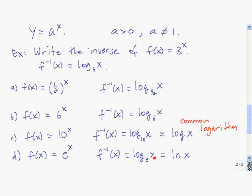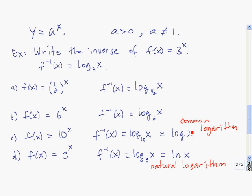The last one is log base e of x. Instead of writing log base e of x, we write ln of x. Just like e to the x is called the natural exponential function, ln of x is called the natural logarithmic function — or we just say the natural log of x. These last two logarithms are the ones on your calculator, so you can use it to evaluate log of a number or the natural log of a number.